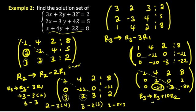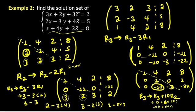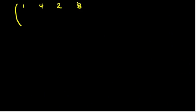10 times R2 is 0. 0 minus 10 plus 10 times 1 equals 0. The matrix is: 1, 1, 4; 2, 8, 0, 1; 0, 1; 0, minus 10, minus 3, minus 22.